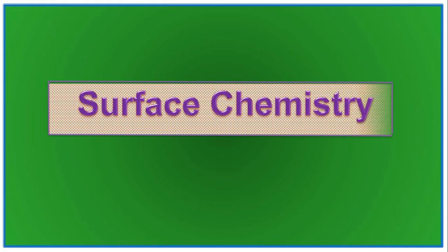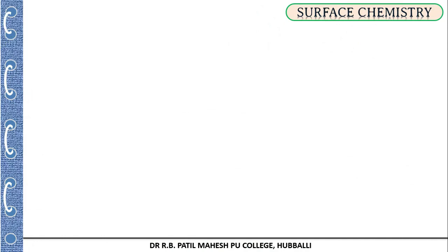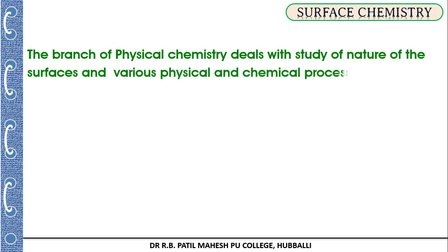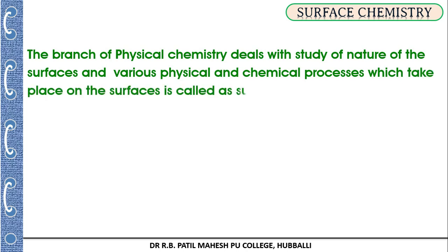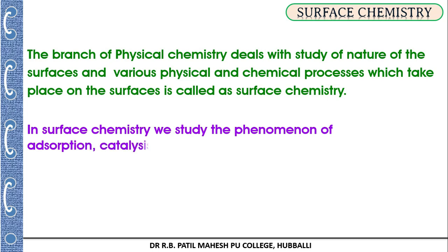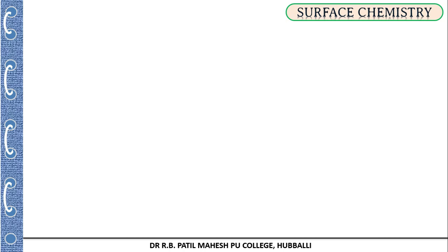Hello students, welcome to Surface Chemistry, new chapter part one. Surface chemistry is a branch of physical chemistry that deals with the study of the nature of surfaces and various physical and chemical processes which take place on the surfaces. In this chapter, we are going to study phenomena like adsorption, catalysis, and colloidal properties.